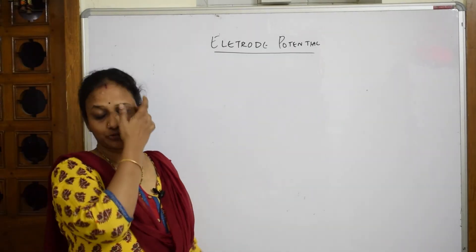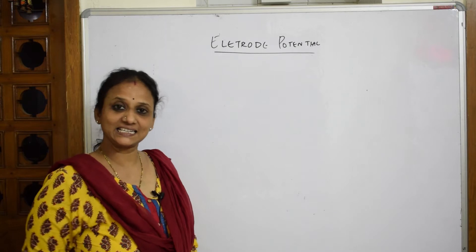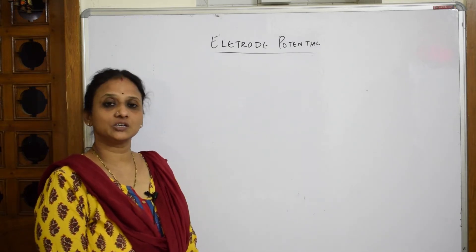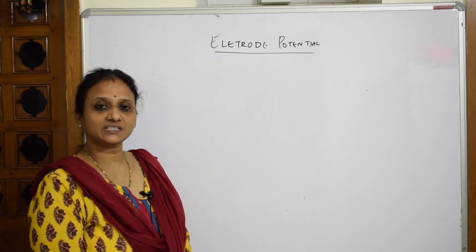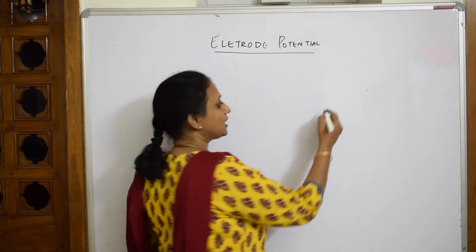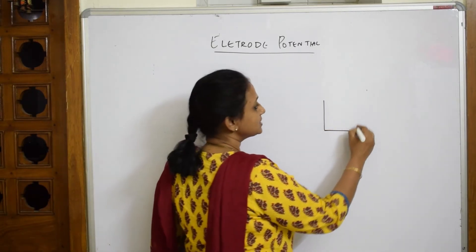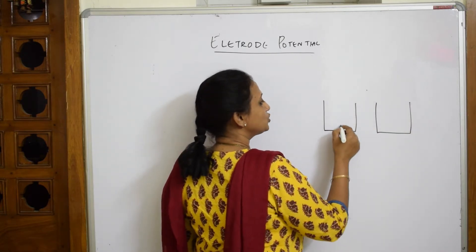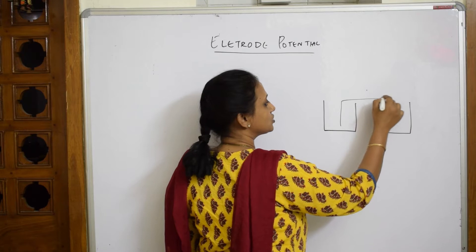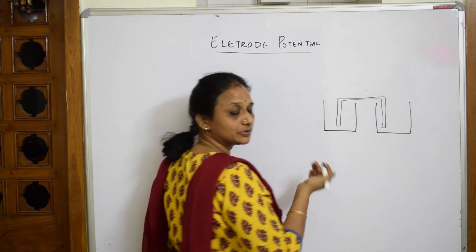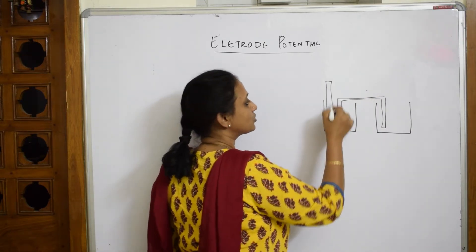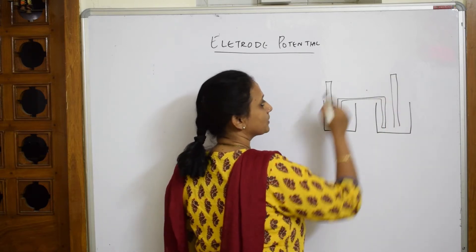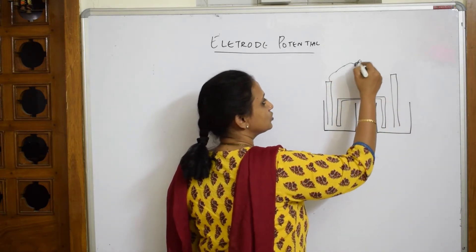Let's come back and discuss electrode potential. We've already discussed the Daniel cell. In an electrochemical cell, you have two half cells — this is one half cell and this is another. You connect them with a salt bridge. You have one electrode in the anodic compartment and one electrode in the cathodic compartment, and this is also connected to the voltmeter.